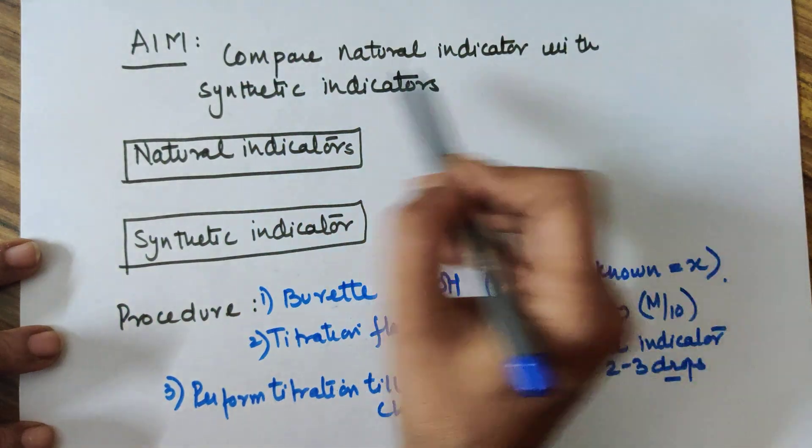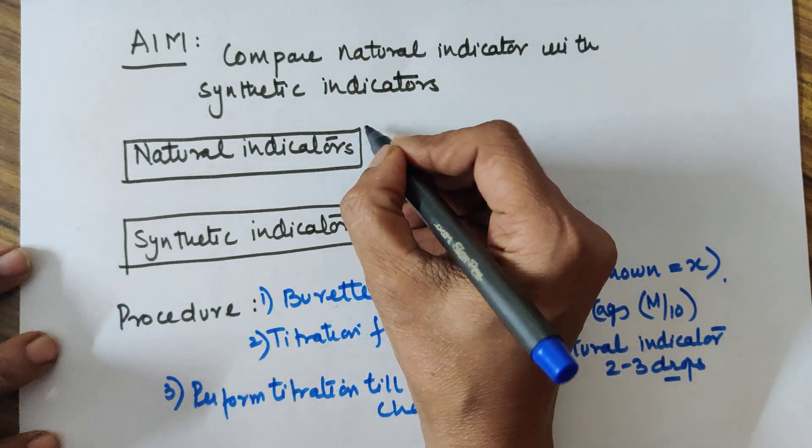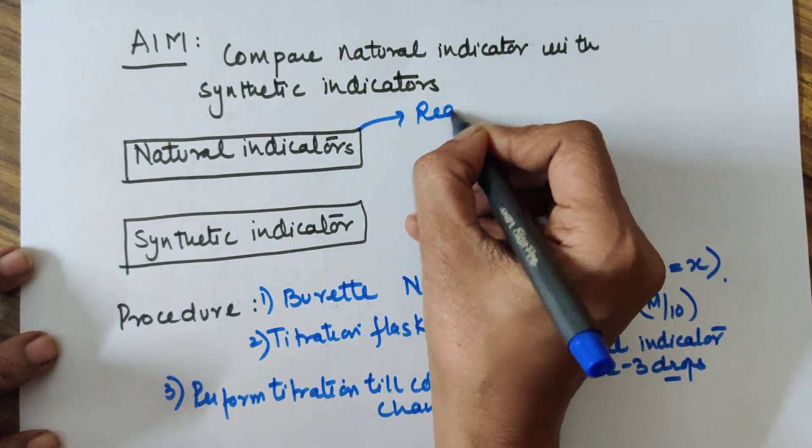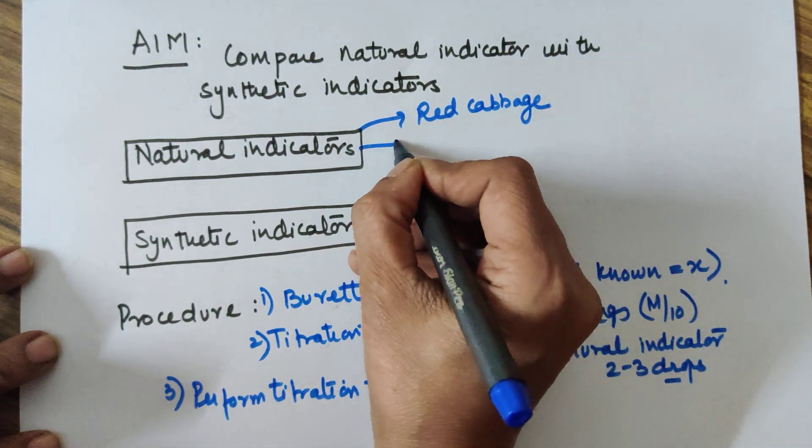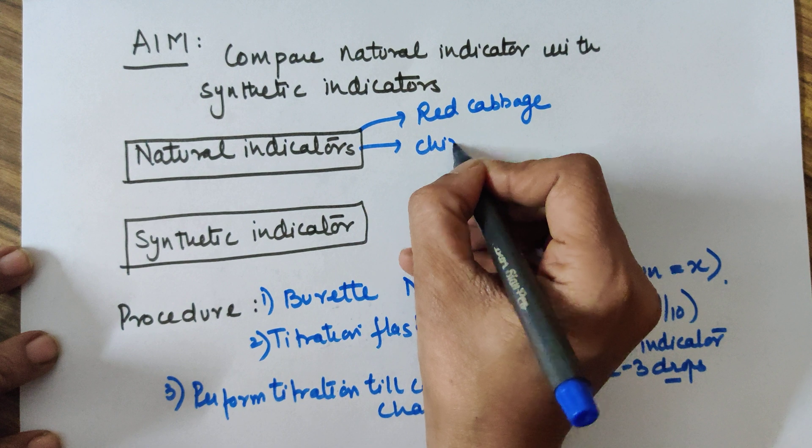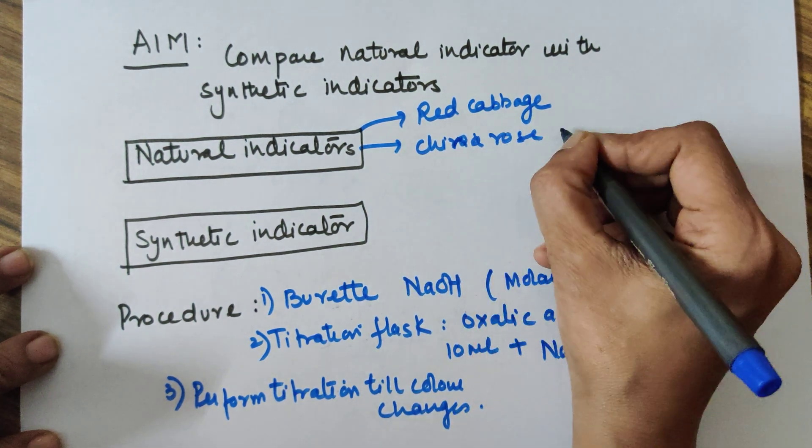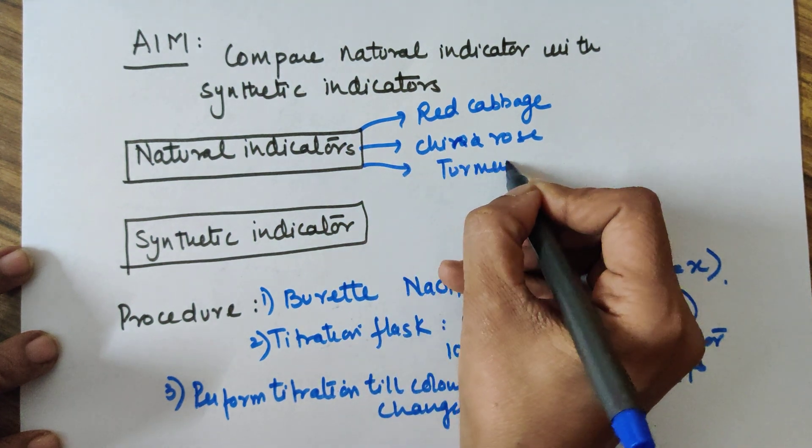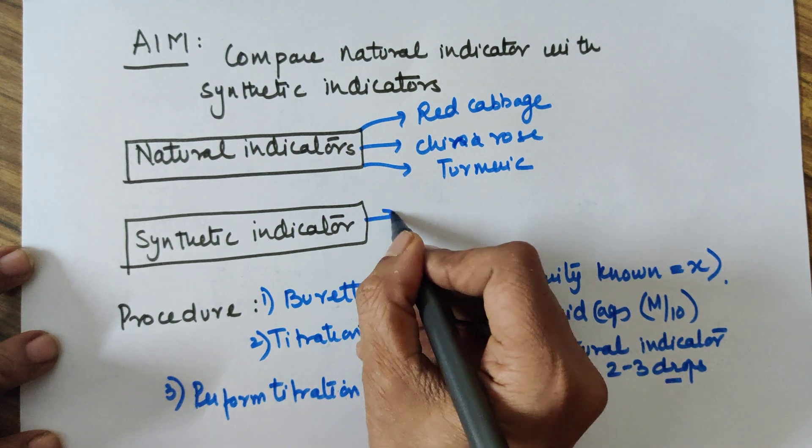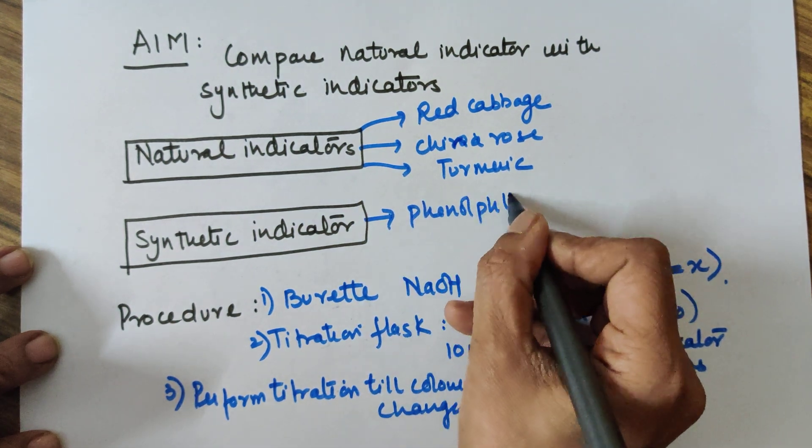Now coming to the practical part of it, you need to compare the natural indicators with the synthetic indicator. Natural indicators: you can use red cabbage solution, you can use China rose solution, you can use turmeric solution, and of course for synthetic indicator you will be using phenolphthalein.